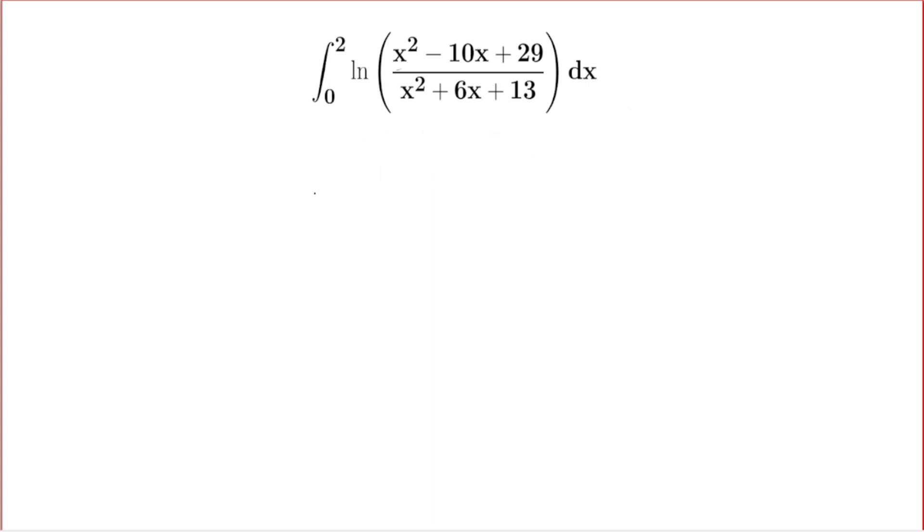First, we need to convert this to perfect square form. I can write x² - 10x + 29 as 25 + 4, and in the denominator, x² + 6x + 13 as 9 + 4, all inside ln.